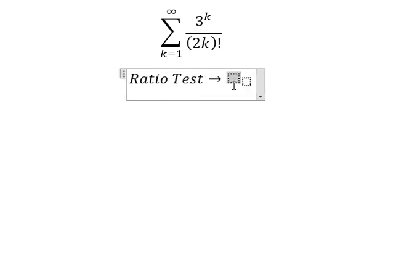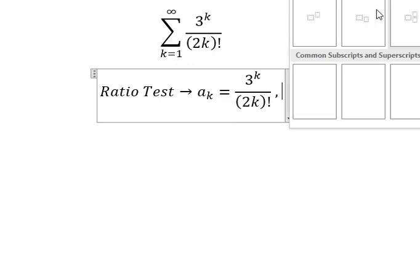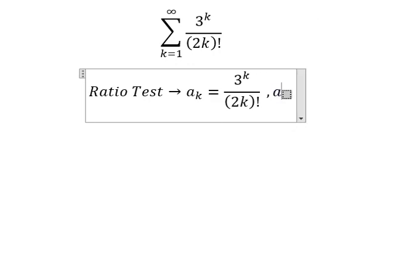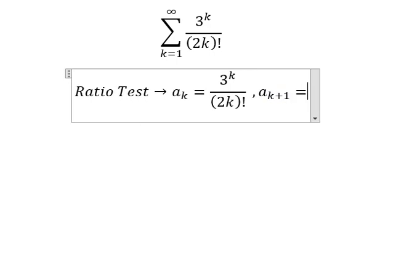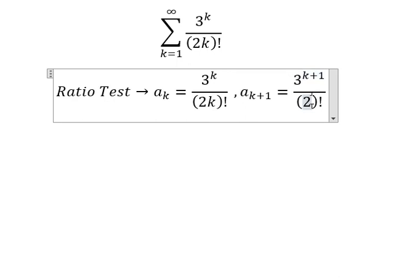So I will put a_k that is about this one, and then we have a_{k+1}, so I will put k plus one here and k plus one here.